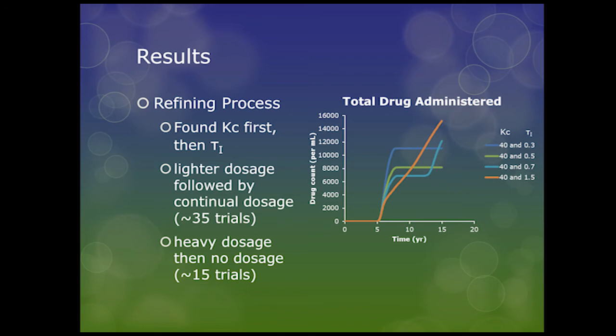We found that if we wanted to have a steady state of about 10 virus count per milliliter of blood, a tau-i of 1.5 years is good. And if we wanted the smallest initial spike to just knock the virus down, our tau-i would be about 0.5. You can see on our graph here, which compares several different versions, that the green line — our Kc of 40 and tau-i of 0.5 — gave us the lowest total amount of drug administered over the 10-year period we optimized for.